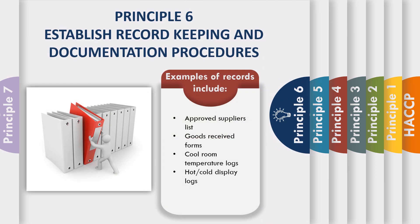Principle 6: Establish record keeping and documentation procedures. Accurate and efficient record keeping is essential for a food safety program. The extent of recording will vary according to the type of business, customer base, and legislative requirements. Examples of records include an approved suppliers list, goods received forms, cool room temperature logs, and hot and cold food display logs.